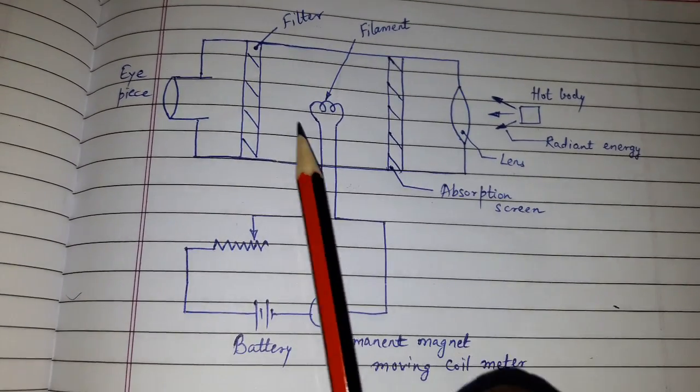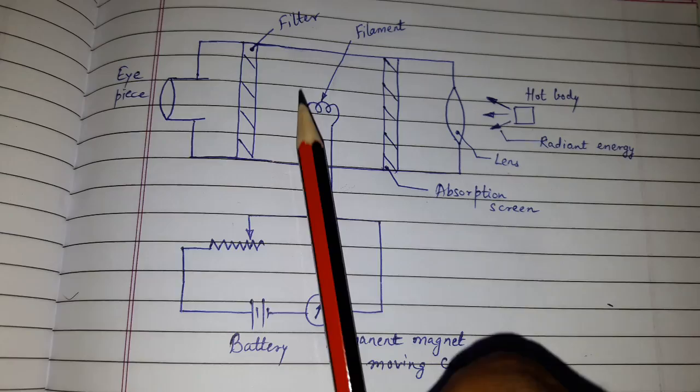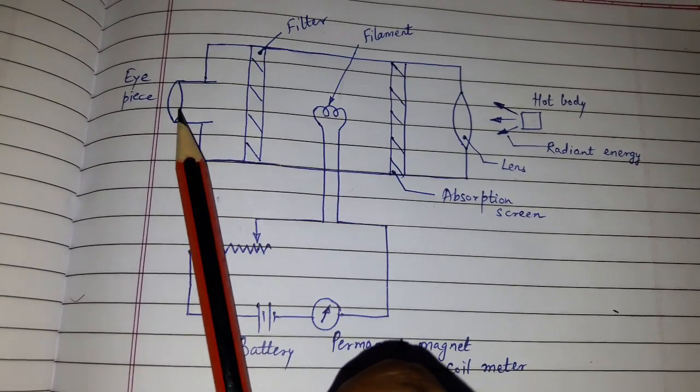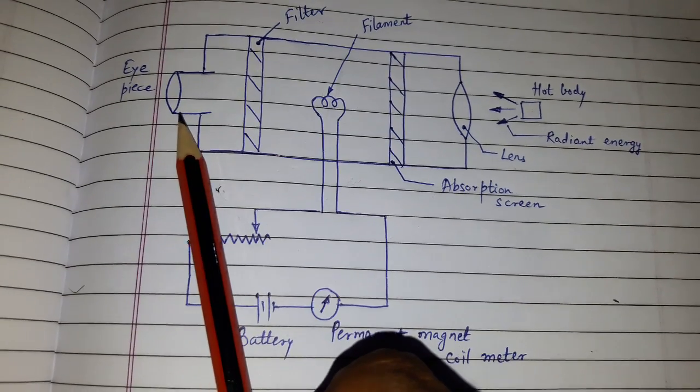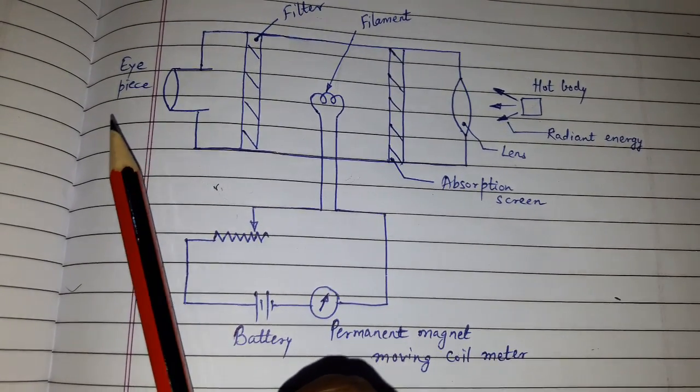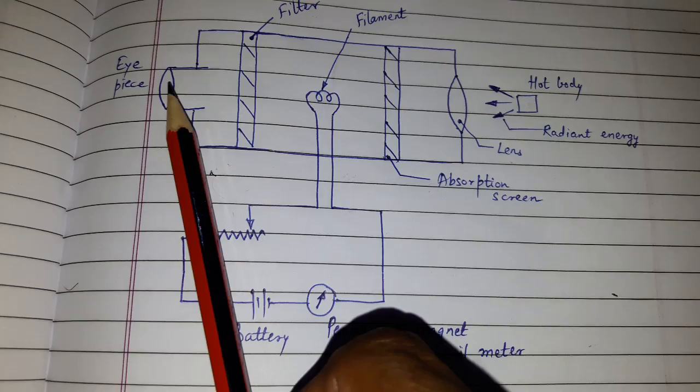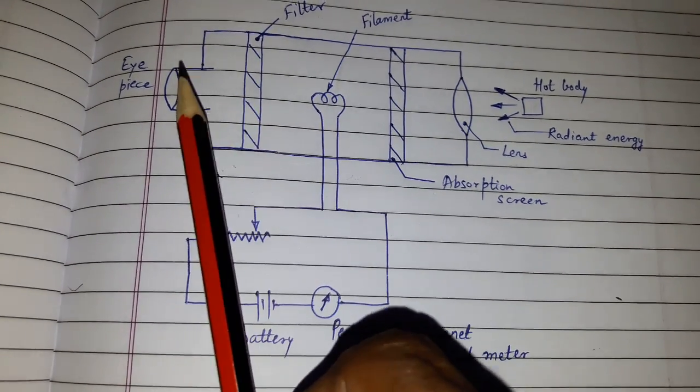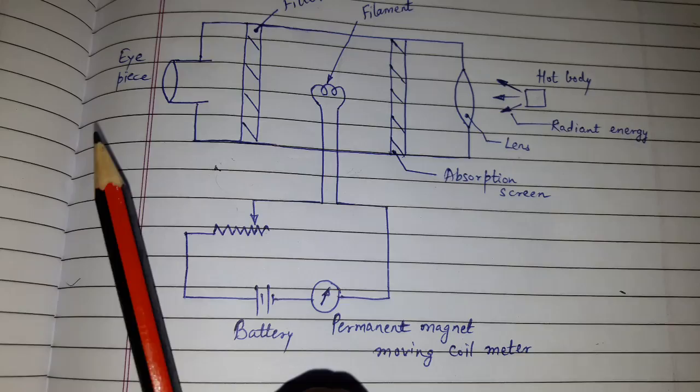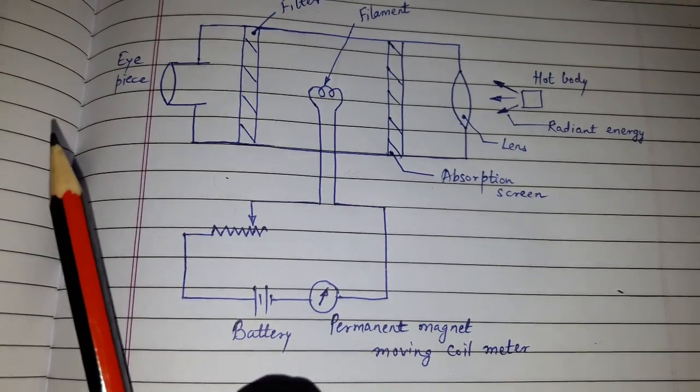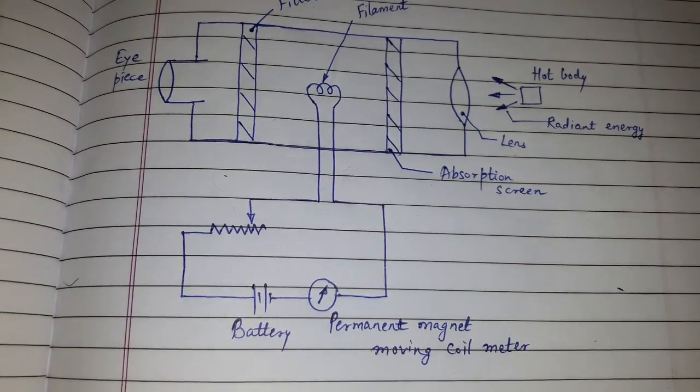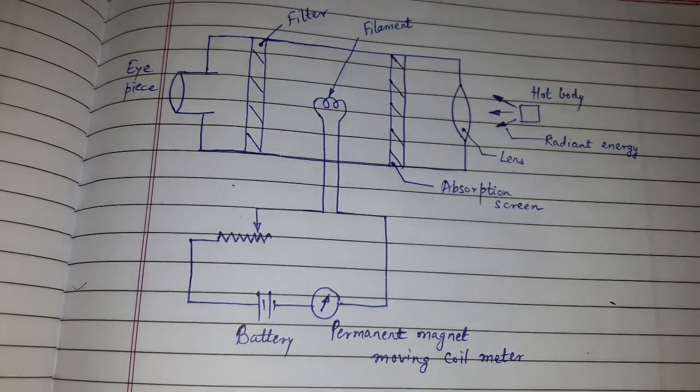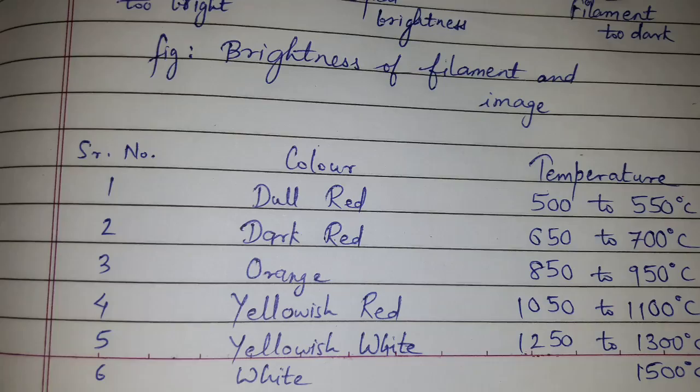So once you have frozen the brightness of the filament and image after both are equal, what you are doing is looking from the eyepiece. The wavelength of the radiation which is accepted is restricted by the color filter, and the brightness which you can see is compared with the standard lamp. And then you know what is the temperature, and this table will help you to know the temperature.